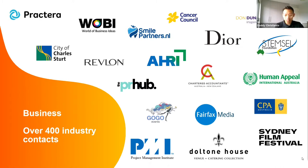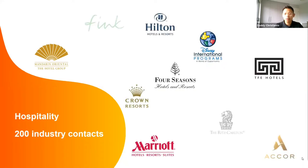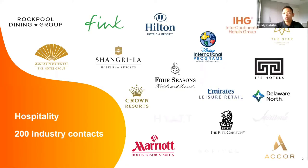The next faculty is hospitality. Students choose to study hospitality at Torrens University because we are number one in Australia for hospitality and leisure management, number one hotel management school, and our William Blue Dining restaurant is in the top 10 on TripAdvisor. Programs offered under hospitality include international resort and hotel management, culinary management, hospitality management, and tourism management. We have a sample of 200 industry contacts under the hospitality faculty, including very well-known brands such as Hyatt, Mandarin Oriental, IHG, Hilton, and more.